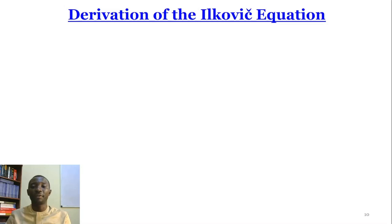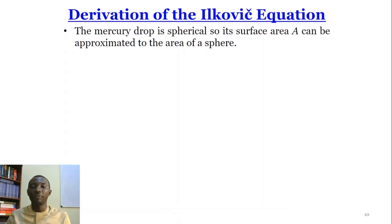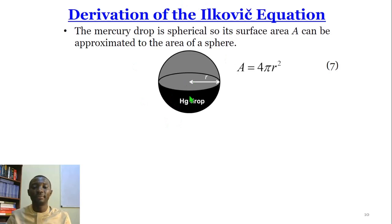So, derivation of the Ilkovič equation. The mercury drop is spherical, so its surface area can be approximated to the area of a sphere. So, this is the mercury drop. This is the radius of the mercury drop. And the surface area of the sphere is 4πr², which represents the surface area of the mercury drop. But there is a question, what is the radius of the mercury drop? We don't know. And we can't measure it because it's being formed in the system. We can't go in and measure the size of the mercury drop to find the radius.